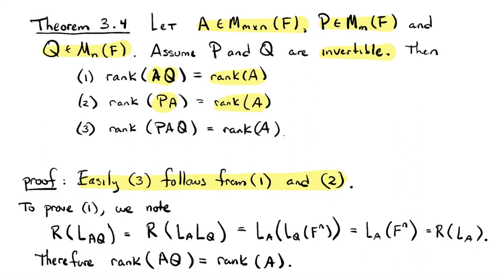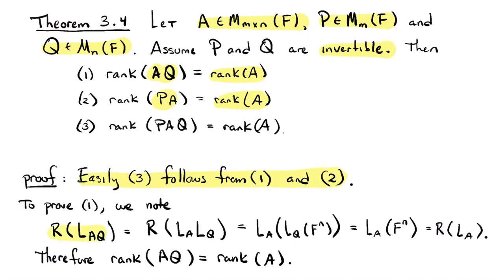To prove statement one, let's look at the range of the linear map L sub AQ given two matrices A and Q. We've proven that L sub AQ is the composition of L sub A with L sub Q. The range is just L sub A of the image of L sub Q applied to the domain. But Q is invertible, so L sub Q of F^n is F^n — it's a one-to-one-onto map whose range is everything. And L sub A of F^n is by definition the range of L sub A. Since those two subspaces are equal, they have the same dimension — that is, the rank of AQ equals the rank of A.